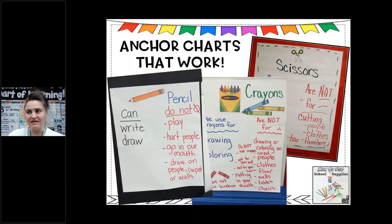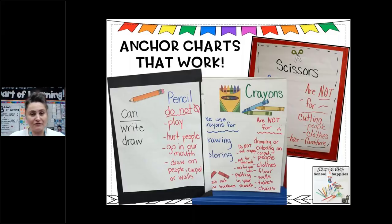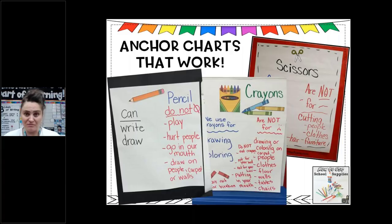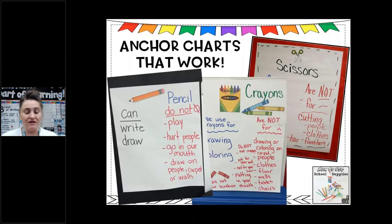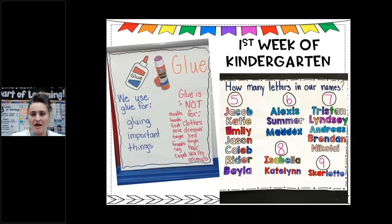My principal told me years ago: 'You can never consequence a student who didn't know their expectation.' I never forgot that. So I just start fresh and say: these are my expectations, we don't use crayons for this. And then if something happens, I can refer back to the anchor chart — 'Do you know why? Let's look at the anchor chart; remember when we made this?' It makes that connection. This approach covers the first week of kindergarten for going over supplies.